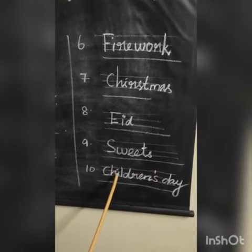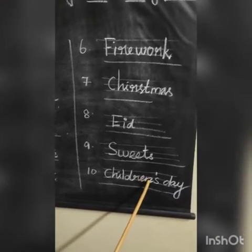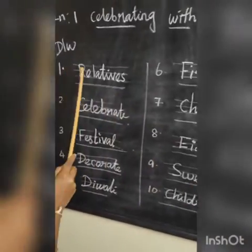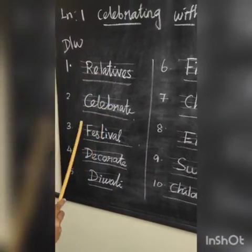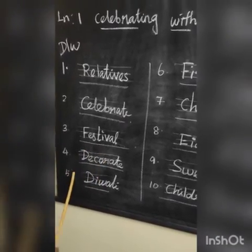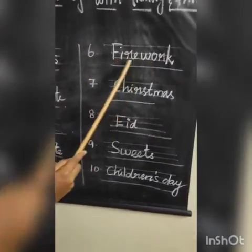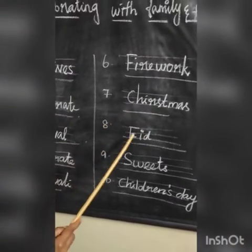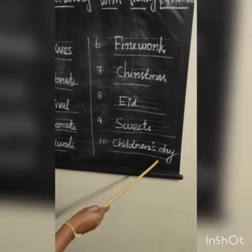10th one: Children's Day. C-H-I-L-D-R-E-N-S D-A-Y. Children's Day. Review: 1. Relatives, 2. Celebrate, 3. Festival, 4. Decorate, 5. Diwali, 6. Firework, 7. Christmas, 8. Eat, 9. Sweets, 10. Children's Day.